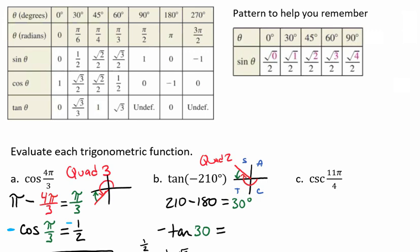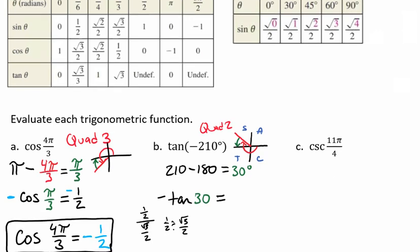Now, tangent, if you forget the table, it's going to be your y over your x, or your sine over your cosine. It's going to be 1 half divided by radical 3 over 2. That's how the radical 3 over 3 is achieved.